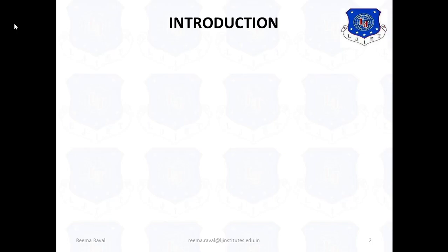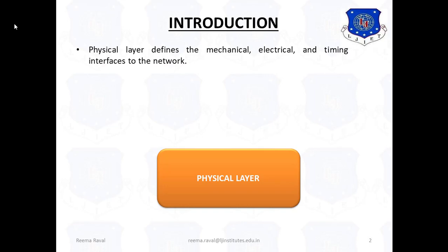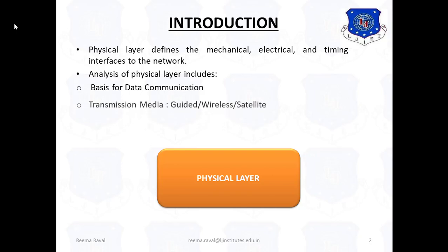The Physical Layer defines the Mechanical, Electrical, and Timing interfaces to the Network. The Analysis of Physical Layer includes Basis for Data Communication, Transmission Media that is either Guided, Wireless, or Satellite, and the Examples of Communication Systems. In this chapter, we are looking at the Lowest Layer, that is Physical Layer, from the Reference Models.